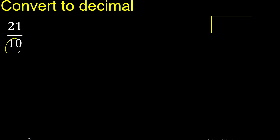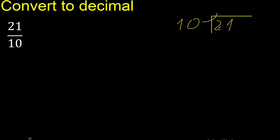21 divided by 10. 21 is not less than 10, therefore 10 multiplied by which number is nearest to 21 but not greater? Multiplied by 3 is 30, which is greater. Therefore, multiplied by 2 is 20. 21 subtract 20 is 1.